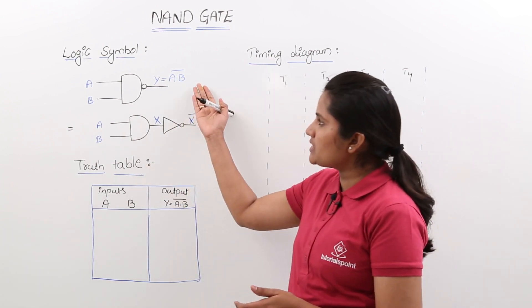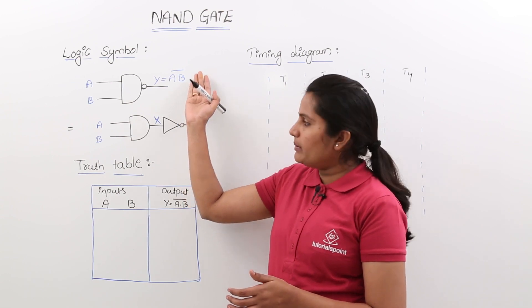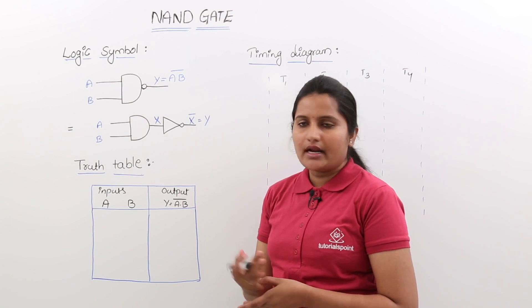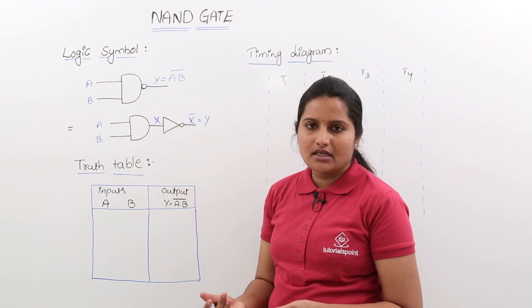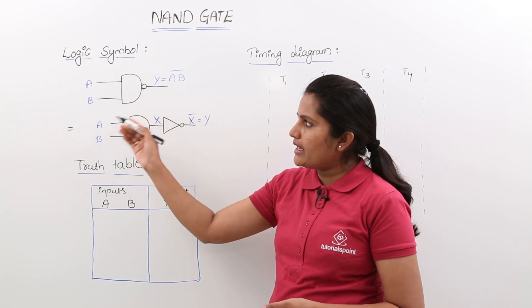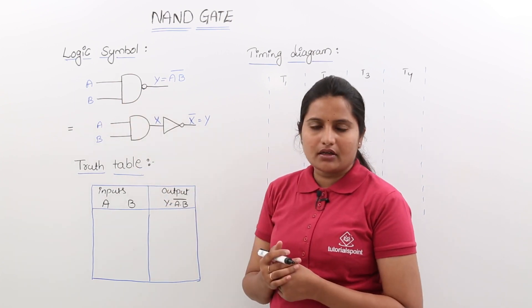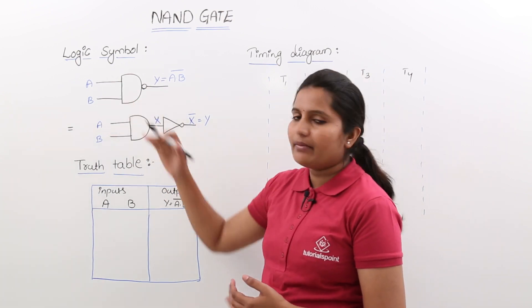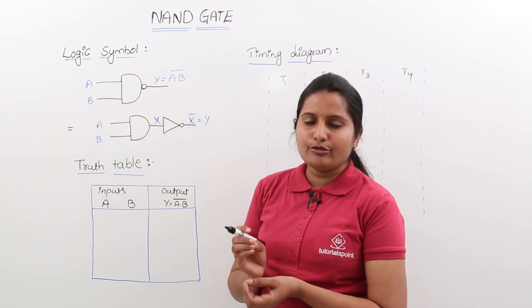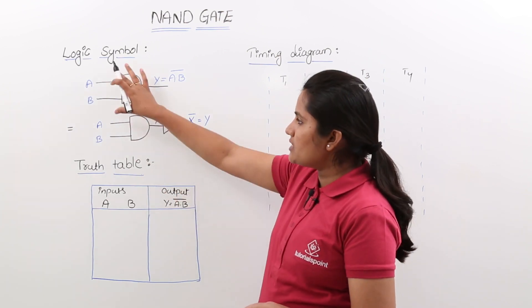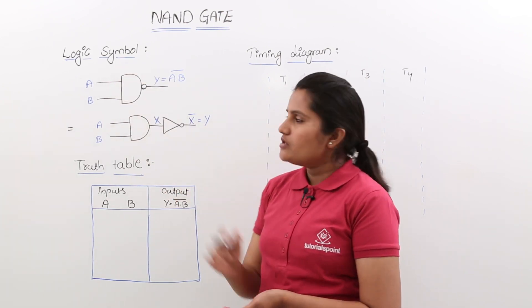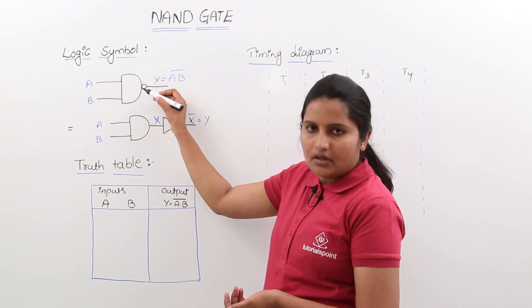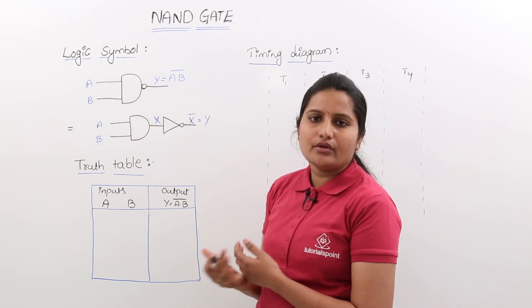Here we can see the logic symbol for a two-input NAND gate. We may have n number of inputs for a NAND gate also — the only difference is we will get n number of input lines for that particular logic gate. For functionality, I am taking a two-input NAND gate as an example. Whatever output there is from AND, that is going to be NOT-ted, meaning it is going to be complemented.